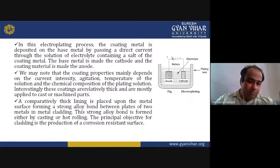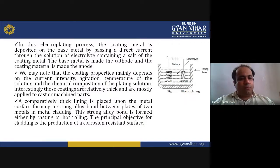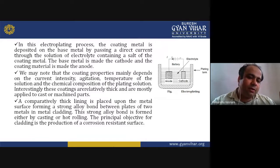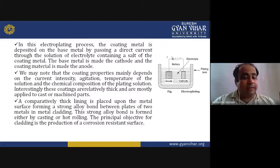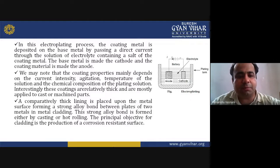In metal cladding, a comparatively thick lining is placed upon the metal surface, forming a strong alloy bond between plates of two metals. The strong alloy bond is formed either by casting or hot rolling. The principal objective of cladding is the production of a corrosion-resistant surface.